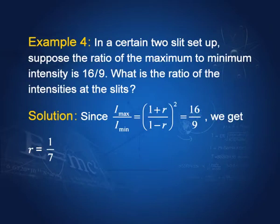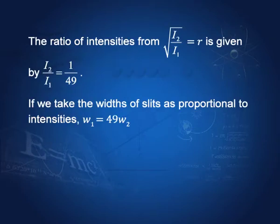In this case, using the formula Imax/Imin = 16/9 (given), we solve for r using ((1+r)/(1−r))² = 16/9, giving r = 1/7. Therefore I2/I1 = r² = 1/49. If slit width is proportional to intensity, then the width of slit 1 is 49 times the width of slit 2.